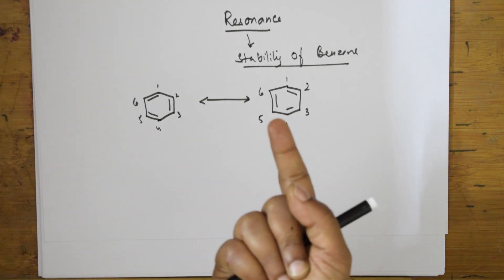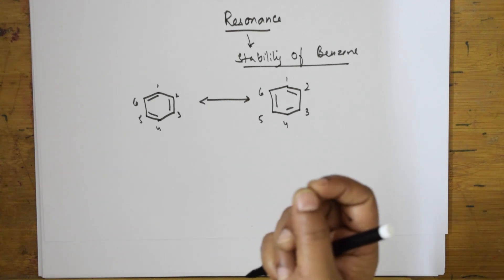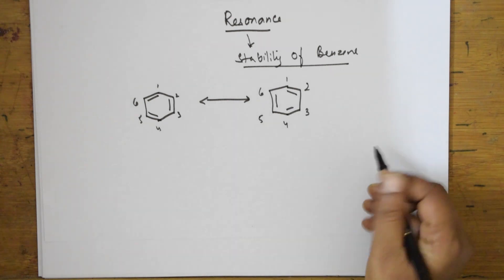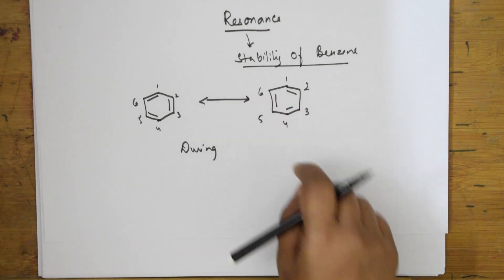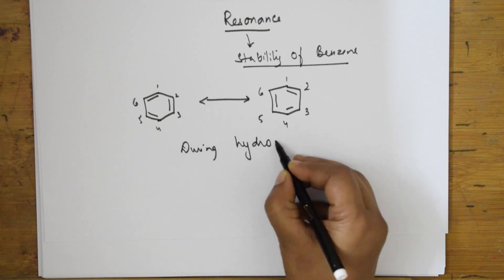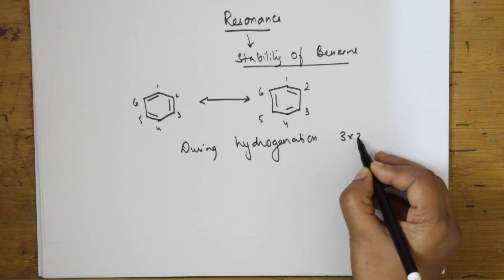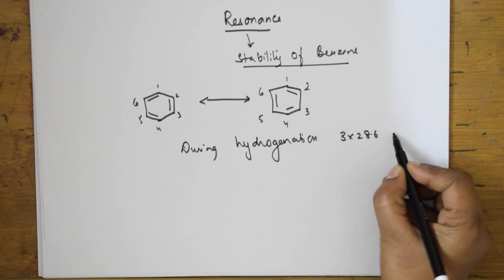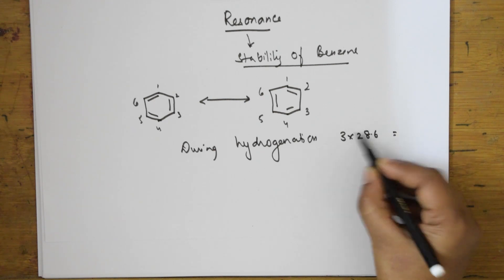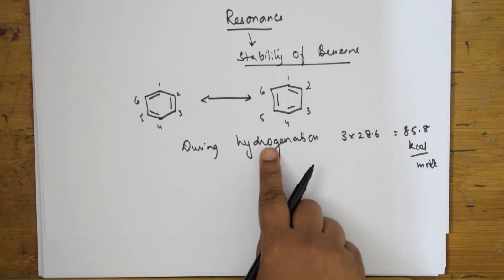Cyclohexene has only one pi bond and releases 28.6 kilocalories per mole during hydrogenation. Benzene has three pi bonds, so during hydrogenation it should theoretically release 3 × 28.6 = 85.8 kilocalories per mole. Hydrogenation means adding hydrogen and breaking the pi bonds.